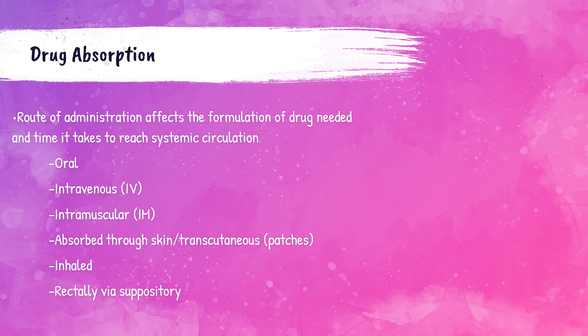There are various ways a drug can be absorbed in the body. The medication can be given as an oral dose, inhaled, or through a transcutaneous patch. Medication can also be injected intravenously through a vein, which is also called IV, or intramuscular through a muscle, or IM. Doses can also be given rectally via suppository.